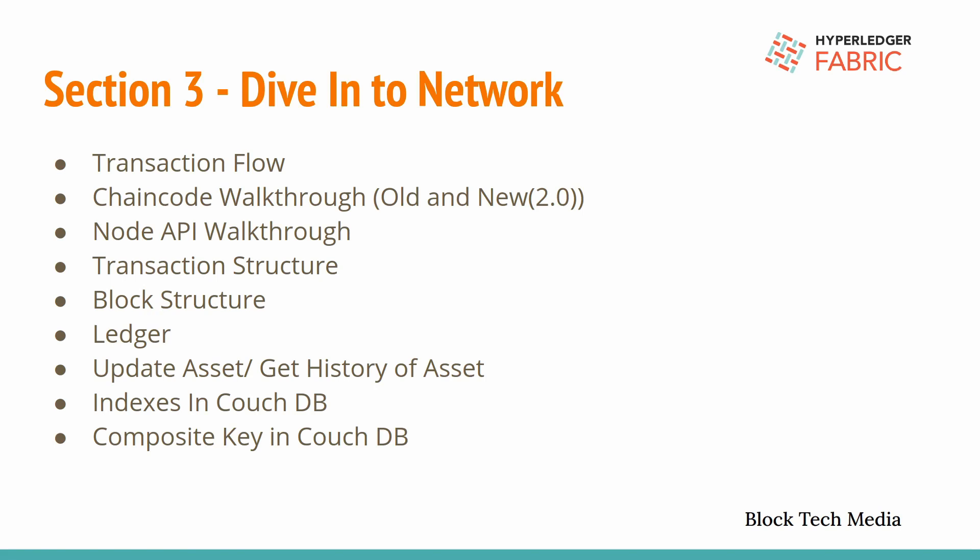Later we will cover the ledger. The ledger contains two parts: the first is the current state database and the second is the actual blockchain. The current state is sometimes called the world state or latest state. In this network we are going to use CouchDB as the current state database. We have other options such as LevelDB, but CouchDB has advantages — we can implement complex queries with CouchDB. When we talk about the blockchain, we will cover where exactly it gets stored in the network, how these blocks are interlinked with each other, and I will show exactly how it happens.